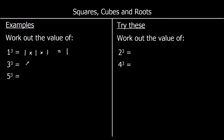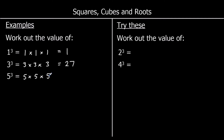3 cubed means 3 times 3 times 3. 3 times 3 is 9, and then 9 times 3 is 27, so 3 cubed is 27. And 5 cubed means 5 times 5 times 5. 5 times 5 is 25, and then 25 times 5 is 125.